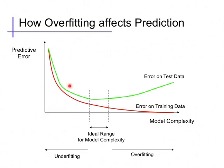Typically, the underfitting regime is characterized by fairly close values between the training error and the test error. While the overfitting regime is characterized by diverging values — the training error heads towards zero and the test error increases. In the overfitting regime, our estimated error using only the training data grossly underestimates the actual error we'll experience in practice.